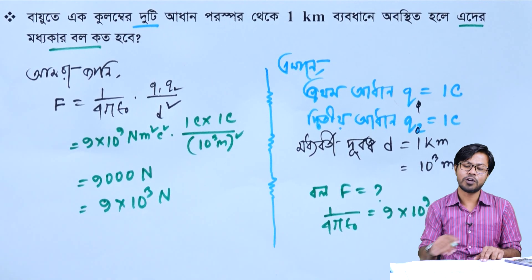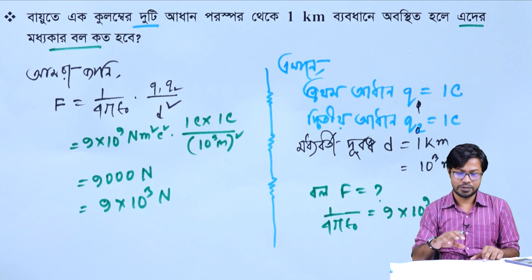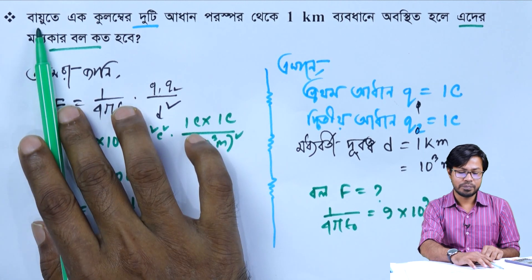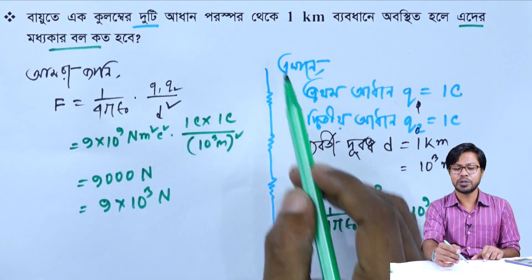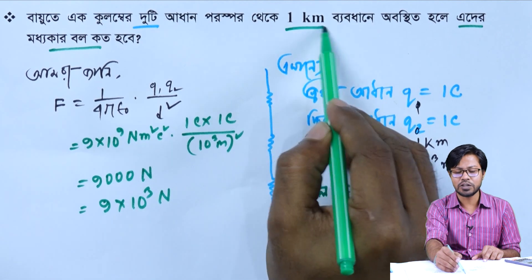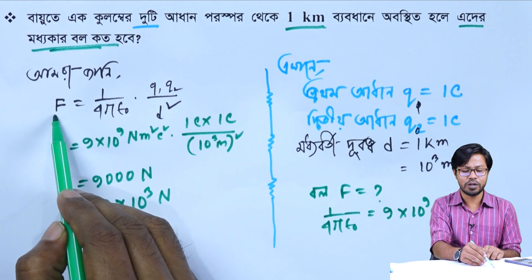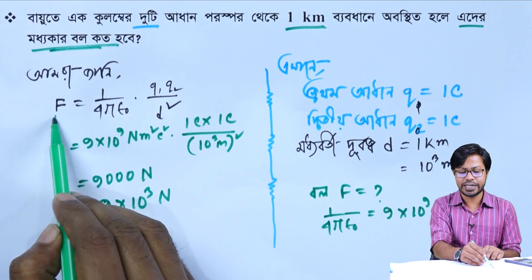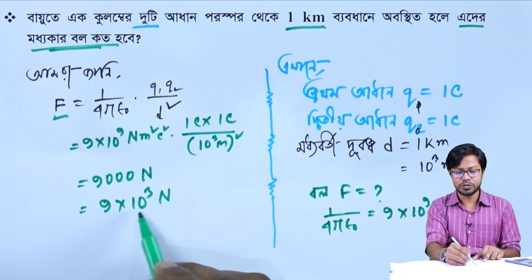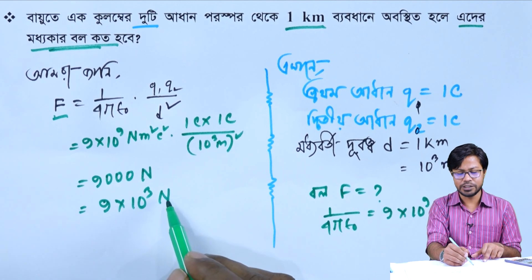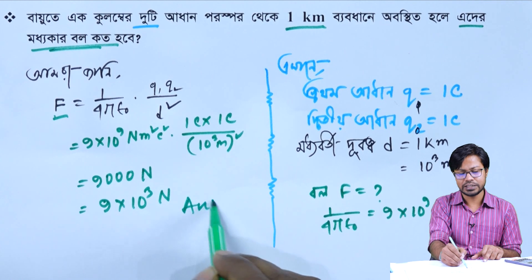If the equivalent of the two charges is the same, the average of one is 1 km. So it's the average ball. The average of the ball is the average ball, and the average of F is 9 into 10 to the power 10 cubed Newton. That's the answer.